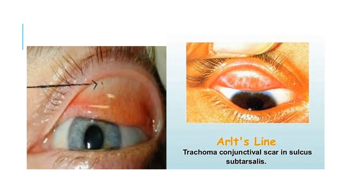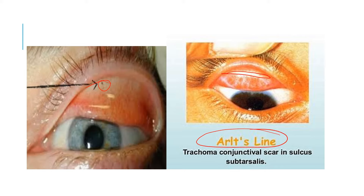Foreign bodies can get lodged in the sulcus subtarsalis. Another important clinical point is that in trachoma you will see scarring in the area of sulcus subtarsalis, which can be seen as a white line referred to as Arlt's line.